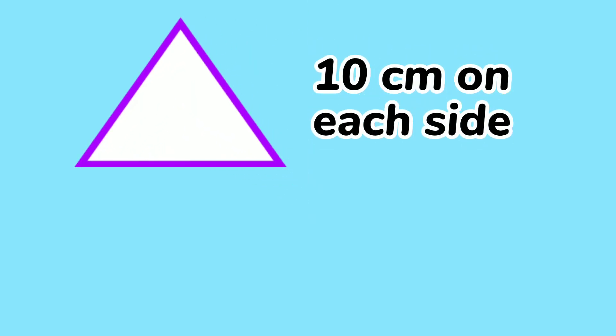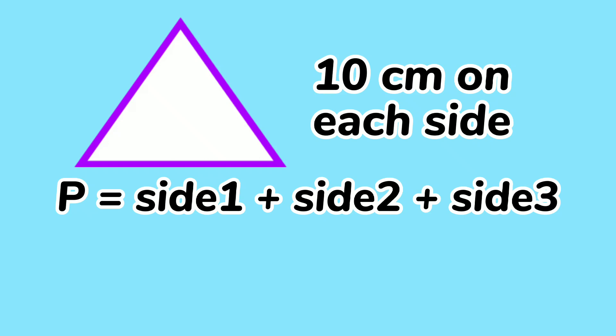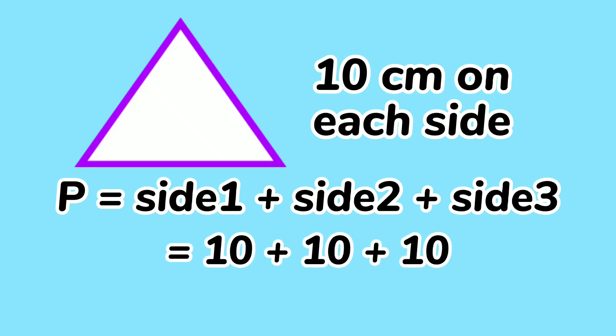Let's have this triangle. Each side measures 10 centimeters. What is the perimeter? So perimeter equals side 1 plus side 2 plus side 3. So 10 plus 10 plus 10, the perimeter of this triangle is 30 centimeters.